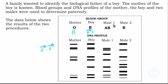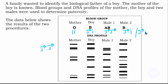Now let's look at male 1. Male 1 has blood type AB, so the genotype for blood type AB is allele for blood type A and allele for blood type B. Now let's get to male 2. Male 2 has blood type B, so the possible genotypes are allele B and allele O, or allele B and allele B.